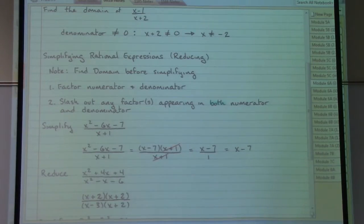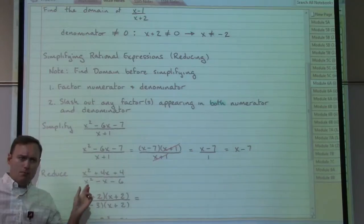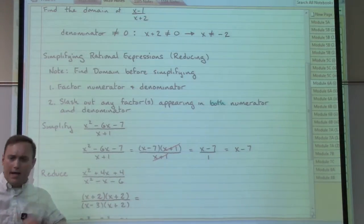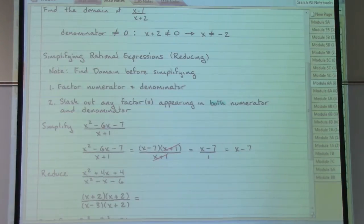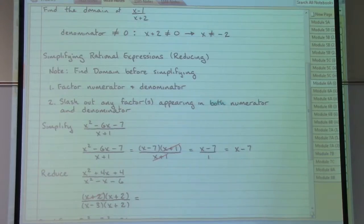So here we see, when we start looking, any common factors that appear on both the top and on the bottom. The top has an x plus two. The bottom has an x plus two. So we can slash out one for one. One x plus two on top. One x plus two on the bottom, slashed out.